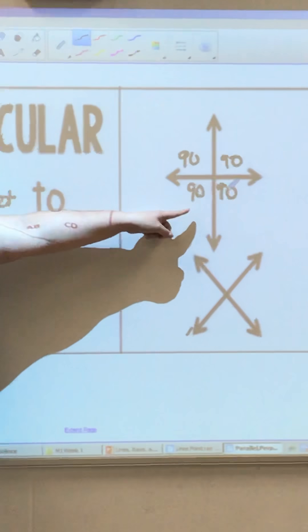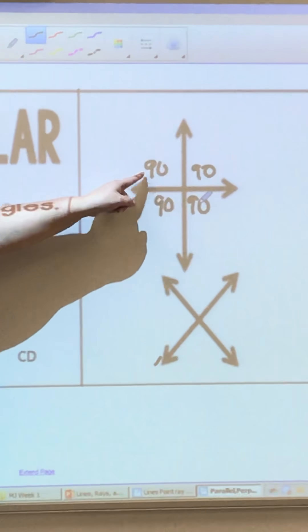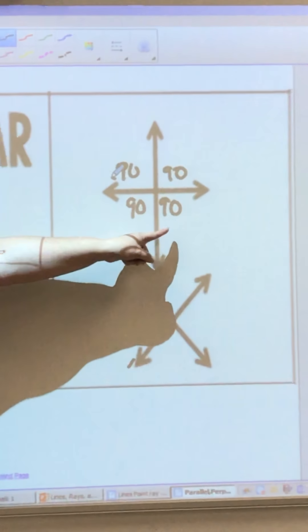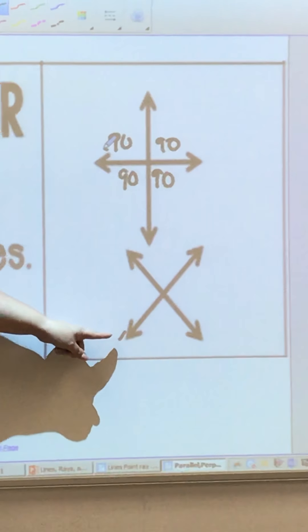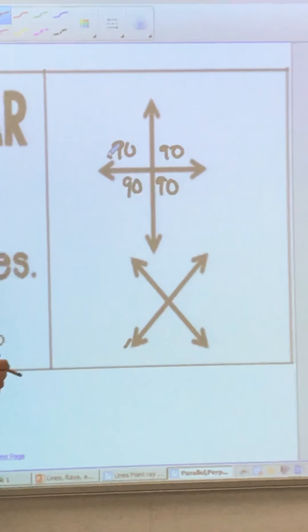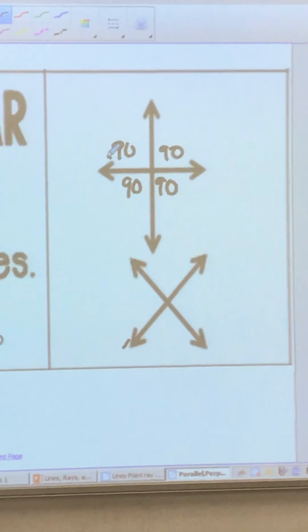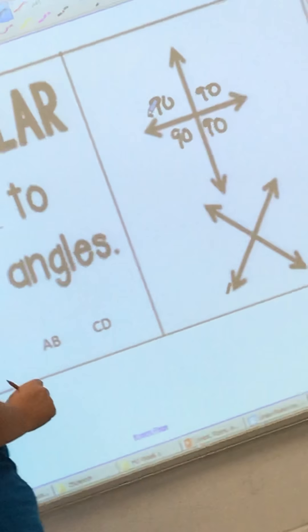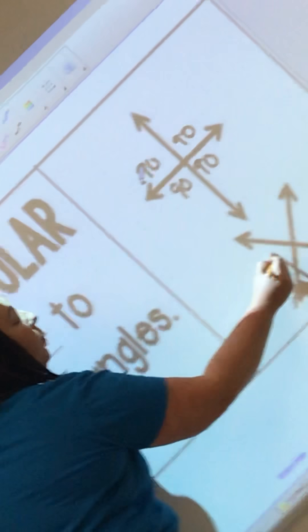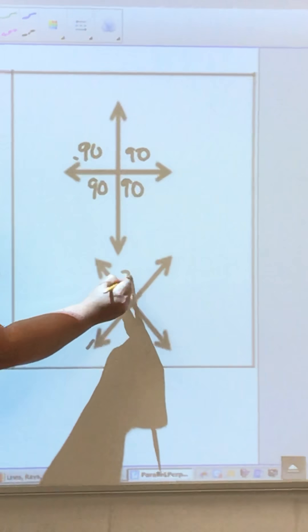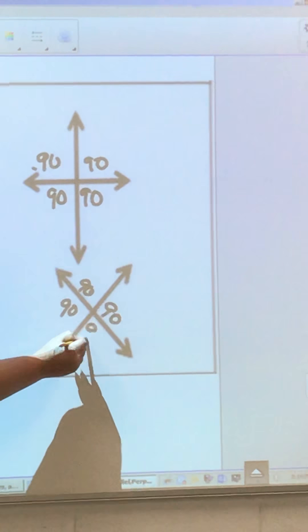We call this the plus sign of perpendicular, it makes 90 degrees in all four corners, or the times sign, perpendicular lines. When they intersect, you have to kind of tilt your head to look at it, but if you tilt your head and look at it, in the corners right here, it does make 90 degree angles.